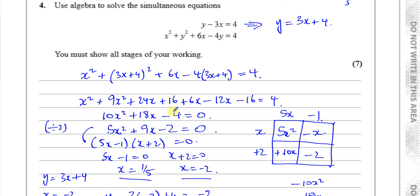When factorizing, always show a proper method. If you feel you must use the calculator, at the very least work backwards from the solutions: write x equals 1/5 and x equals minus 2, then derive 5x minus 1 equals 0 and x plus 2 equals 0, and write those in brackets as the factorization. Don't write it as (x minus 1/5)(x plus 2) — that gives away that you used the calculator, and you should be comfortable factorizing at this stage.